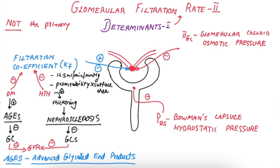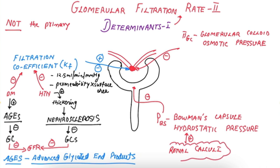Bowman's capsule hydrostatic pressure negatively influences the GFR. It is increased by renal calculi. If there is a calculus in the urinary tract or ureter, it will cause back pressure changes, increasing the Bowman's capsule hydrostatic pressure and thereby decreasing the GFR.